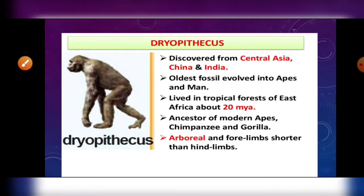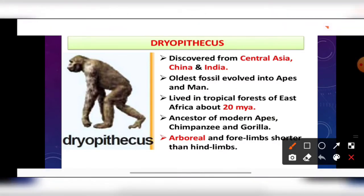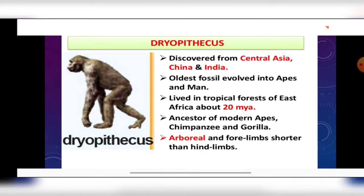The first form in human evolution is Dryopithecus, discovered from Central Asia, China and India. It is the oldest fossil which evolved into apes and man. It lived in tropical forests of East Africa about 20 million years ago. It is considered to be the ancestor of modern apes like chimpanzees and gorillas. Dryopithecus was arboreal — it lived on trees — and its forelimbs were shorter than the hind limbs.